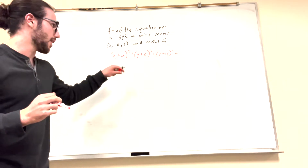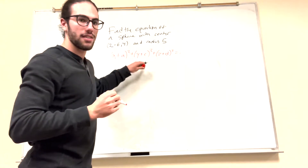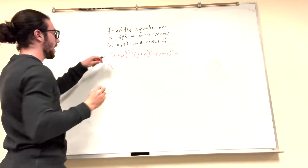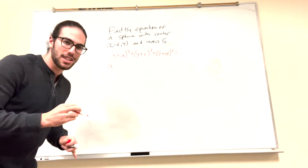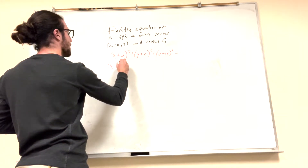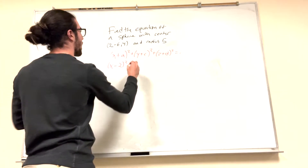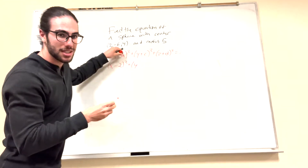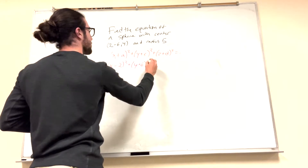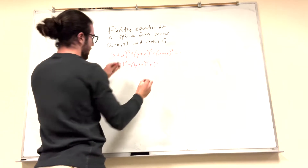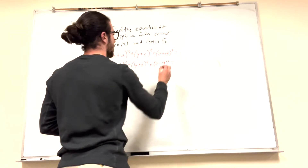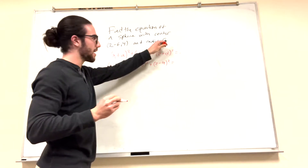So this is how you find an equation of a sphere. Let's plug in what we've got. x is at 2, but if you want it to be at positive 2, you need to do negative 2. So (x minus 2) squared plus — y is negative 6, so that means it's going to be plus 6 — (y plus 6) squared plus (z minus 4) squared, equal to the radius of 5, so 5 squared is 25.